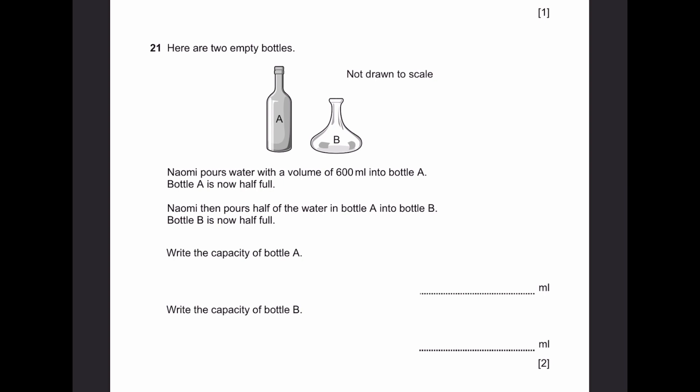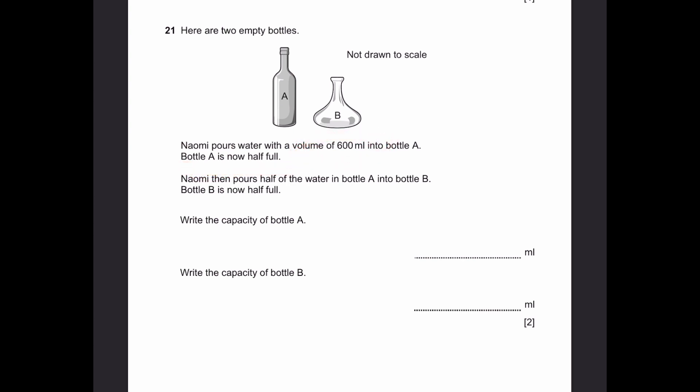Question 21. Here are 2 empty bottles. Naomi pours water with a volume of 600ml into bottle A. It's now half full. Naomi then pours half the water in bottle A into bottle B. Bottle B is now half full. Write the capacity of both bottles. So bottle A is half full with 600ml in it. So capacity of bottle A is 600 times 2 to make it full, so that's 1200ml. Now for bottle B, she pours half the water in bottle A into bottle B and that makes it half full. So 600 divided by 2 is going to be half full, which is 300ml. To make this a full water bottle, multiply by 2, so that's 600ml.